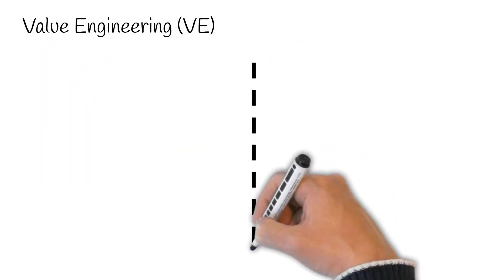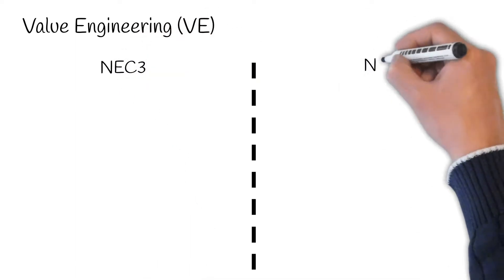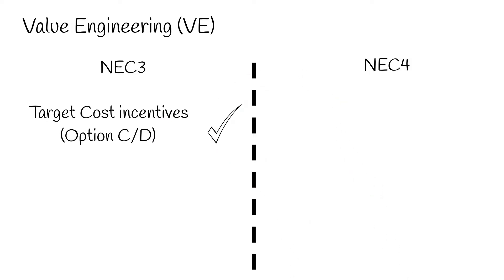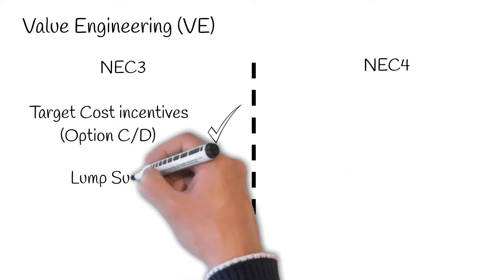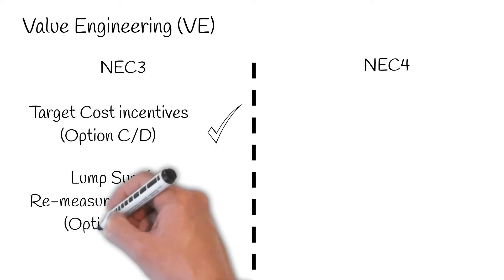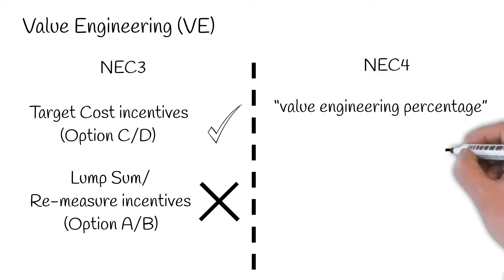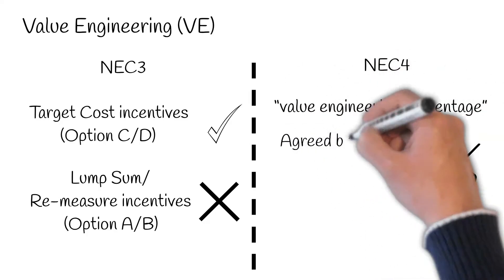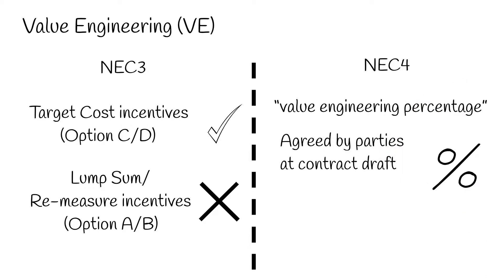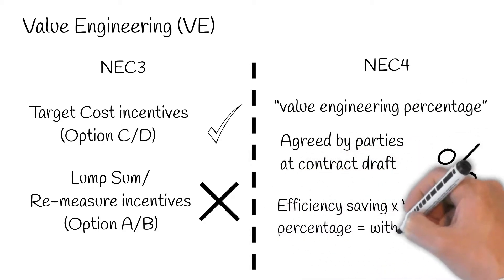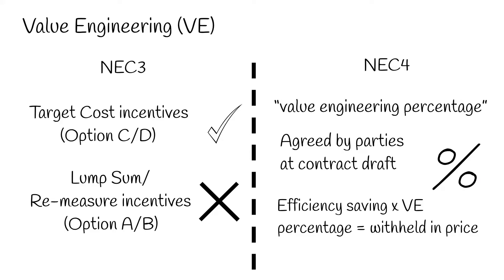New features. Value engineering. Under NEC3, there was an incentive for contractors to propose value engineering under target cost options, the incentive being gain share. However, this incentive did not expand to options A and B. This is corrected in NEC4 with the introduction of a value engineering percentage. A percentage is agreed by parties at contract draft so that, if a price is reduced due to the contractor's value engineering, the agreed percentage will be retained in the price.